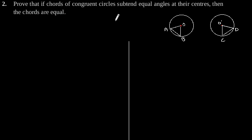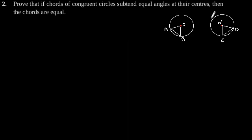Exercise 10.2, Question number 2. Prove that if chords of congruent circles subtend equal angles at their centers, then the chords are equal. For this, let us consider two congruent circles of the same radius with centers O and O'.